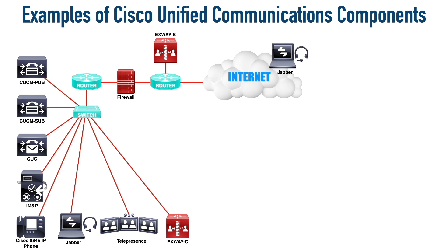The question is, who does that Jabber client point to in order to reach the Expressway server and get to the Communications Manager server? There's going to be a DNS server on the internet that internet-based Jabber clients will use that points to the Expressway edge server — that's their pathway to get into the Communications Manager. But for clients already on the internal network, they need another DNS server. The external DNS points the Jabber client to the edge Expressway server, while the internal DNS server responds with the actual IP address of the Communications Manager. So we've got two different DNS servers that will answer the same question differently depending on whether the client is inside or outside of the network.